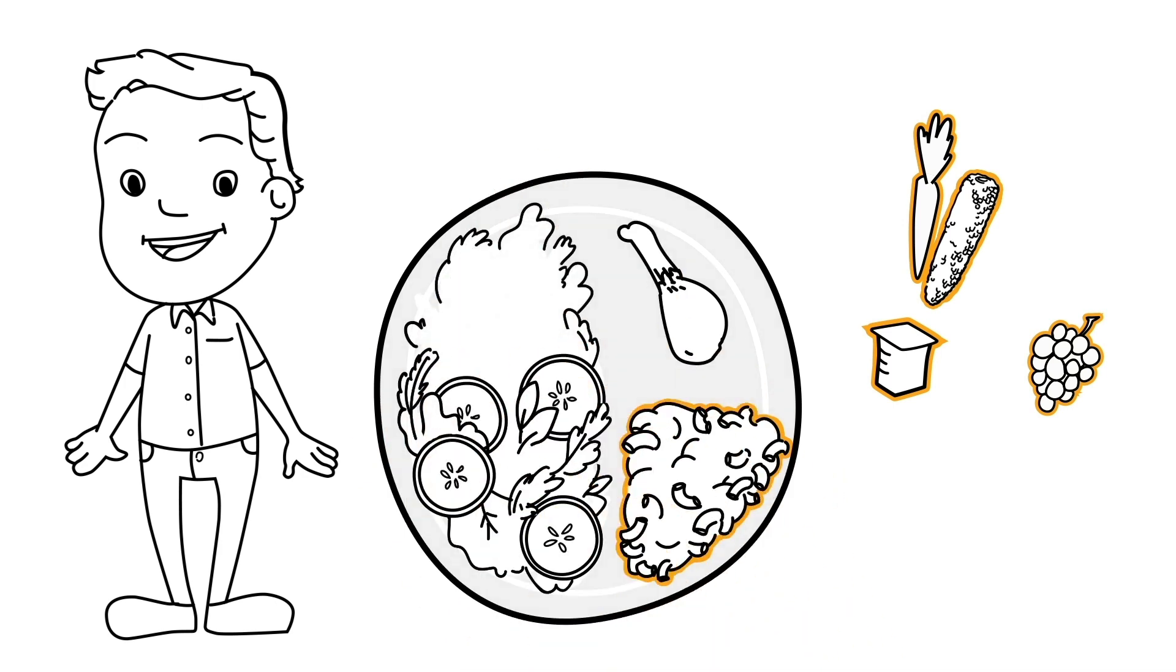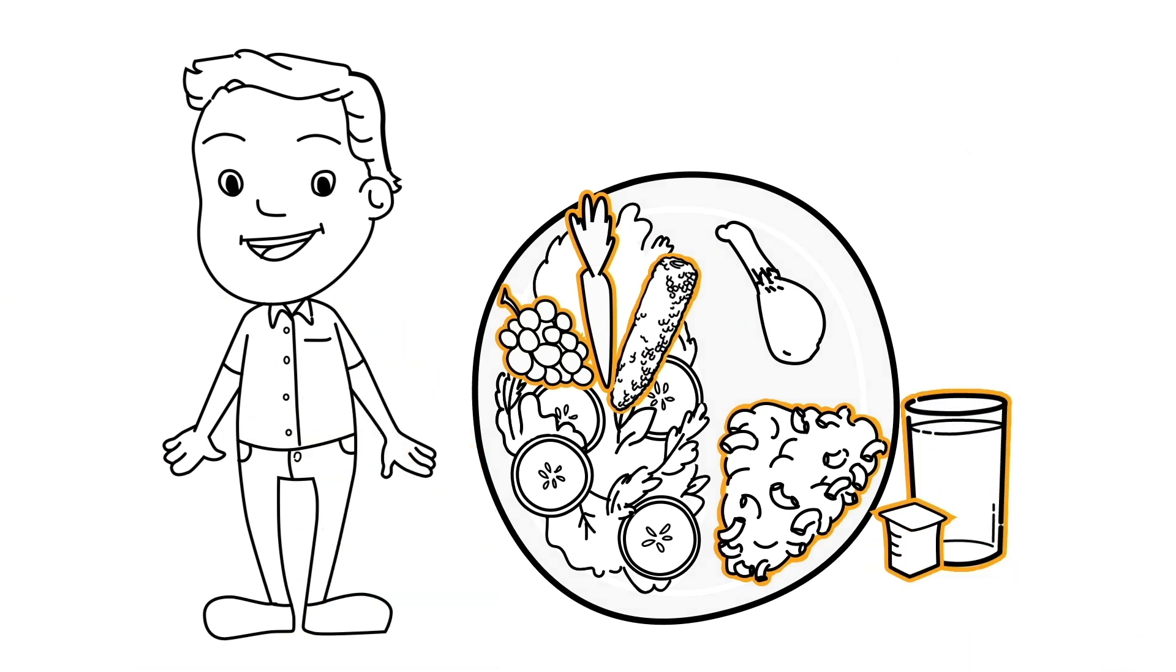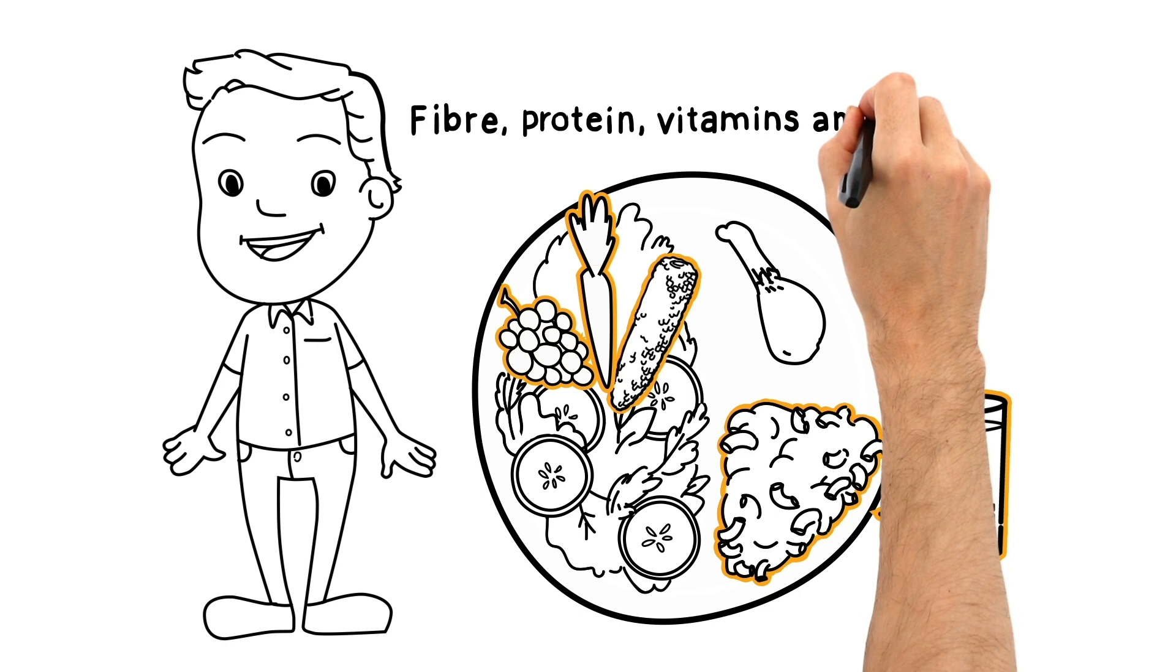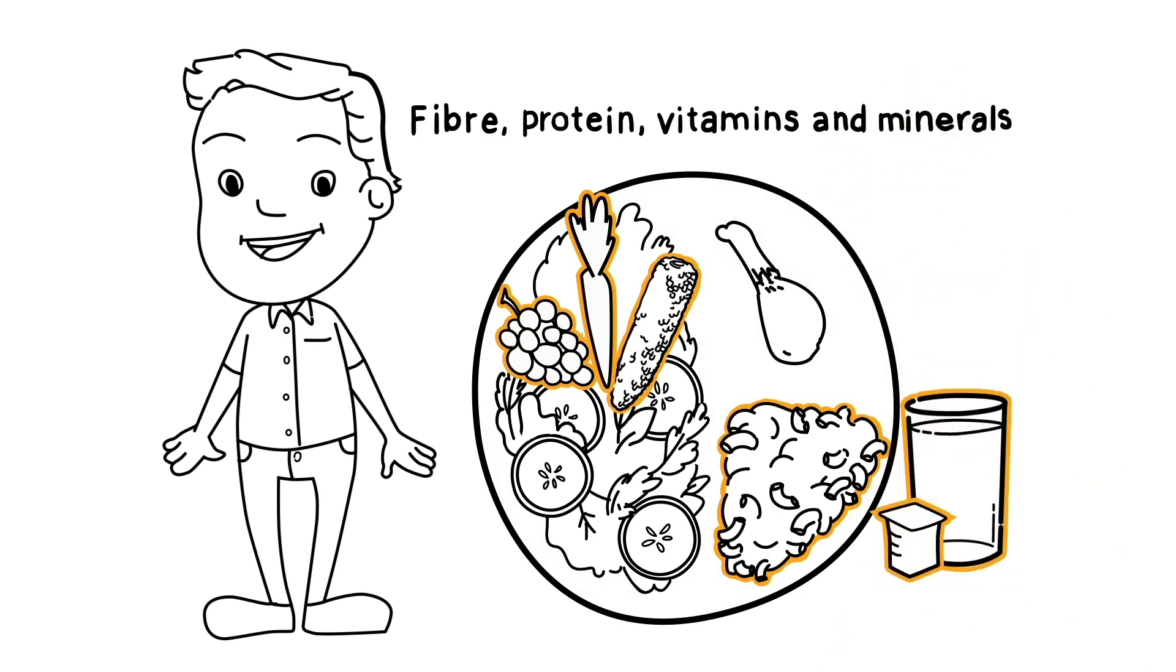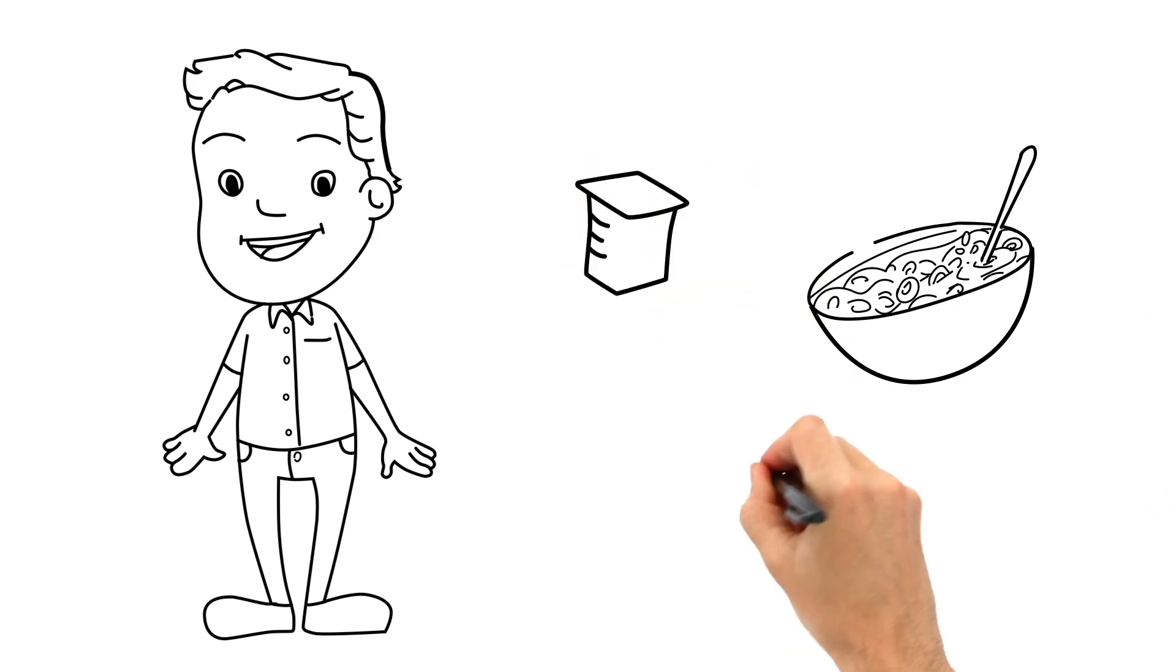Some of Joe's carbohydrate choices naturally contain sugars from fruits, vegetables, and dairy products. These foods also provide key nutrients such as fiber, protein, and a variety of vitamins and minerals. Joe can enjoy small amounts of foods sweetened with added sugars, such as whole grain cereals and yogurts, and allow himself an occasional treat.